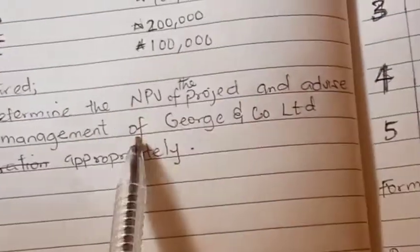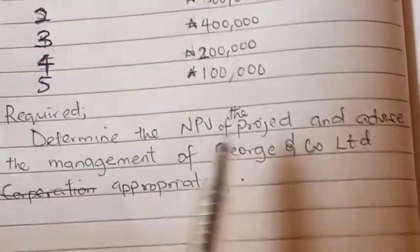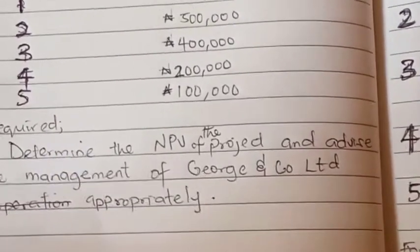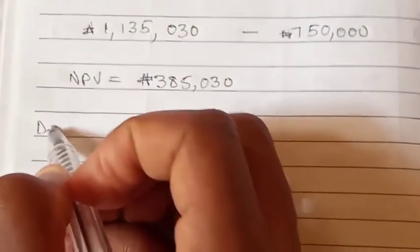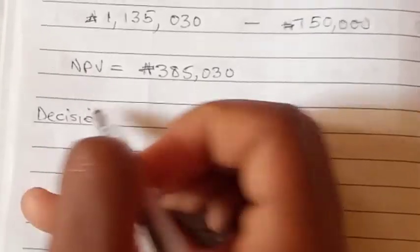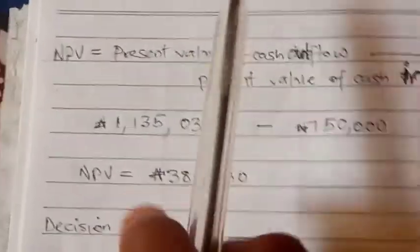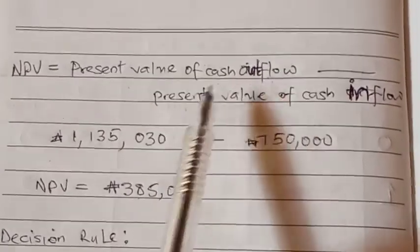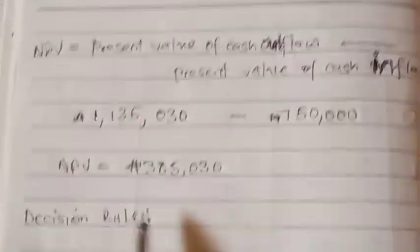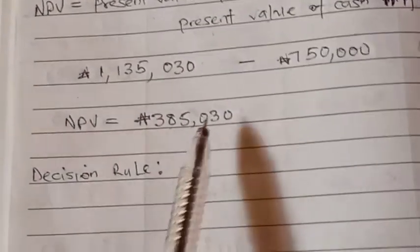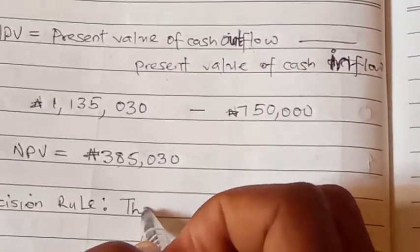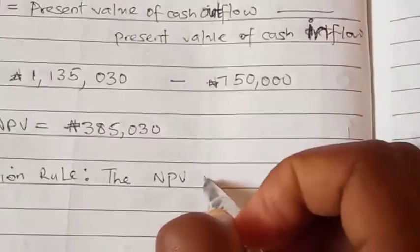This is the difference, which is our NPV. So we're told in the question to advise. We've gotten our NPV, so now we have to advise the management. We should advise them if they should accept or reject the project. So our decision rule: